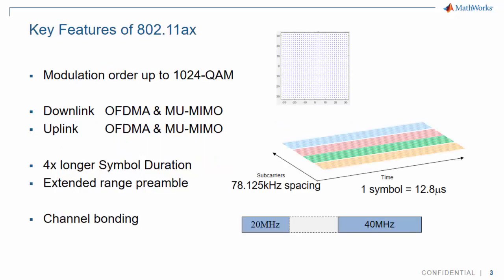To that end, a few key features introduced in 802.11ax are a higher modulation order, OFDMA with or without multi-user MIMO, a longer OFDM symbol duration or, equivalently, a smaller subcarrier spacing of 78 kHz, and channel bonding, which is the ability to skip over a section of spectrum that is not available.